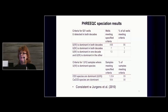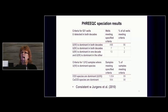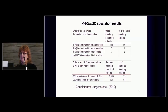Speciation calculations showed that uranium in the 6+ valence state — the oxic form — dominates in 96% of all wells. A handful of wells where uranium 4+ is dominant are in the humid environment. Of the wells where uranium 6+ is dominant, carbonate species are dominant in 99% of samples, and calcium carbonate complexes are dominant in 98% of samples — which is definitely consistent with what Juergens found regarding calcium carbonate complexes being very persistent in the aquifer.